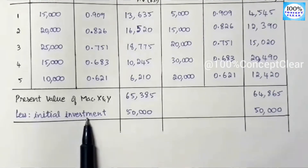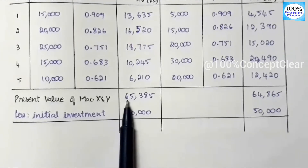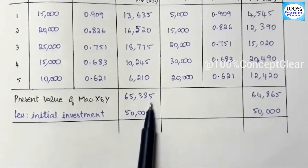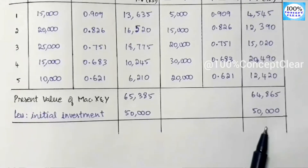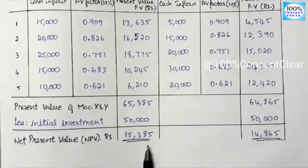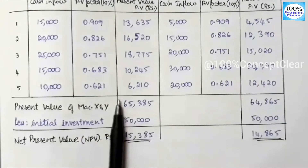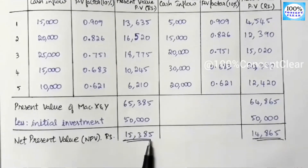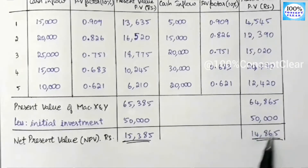For machine X: 65,385 minus 50,000. For machine Y: 64,665 minus 50,000. Therefore, machine X NPV = 15,385 and machine Y NPV = 14,865.